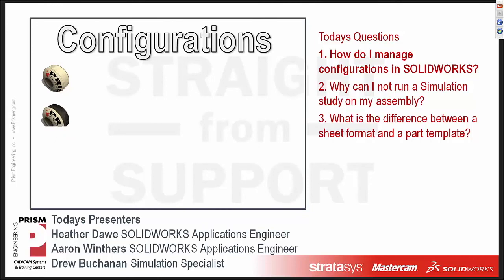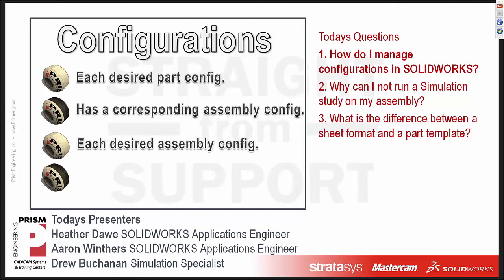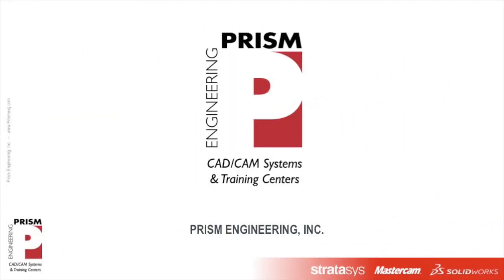With configurations, there are two main points. First, for each desired part configuration you have, make sure you have a corresponding assembly-level configuration. Second, for each desired assembly configuration you have, make sure it also has a corresponding higher-level assembly configuration. If you do that, you should be able to keep your configurations in order. Thank you for joining us today. If you'd like to see more videos, please check out our Prism Engineering YouTube channel. Please do join us on the second Tuesday of each month when we do our Straight from Support webinar. Thanks again for tuning in.